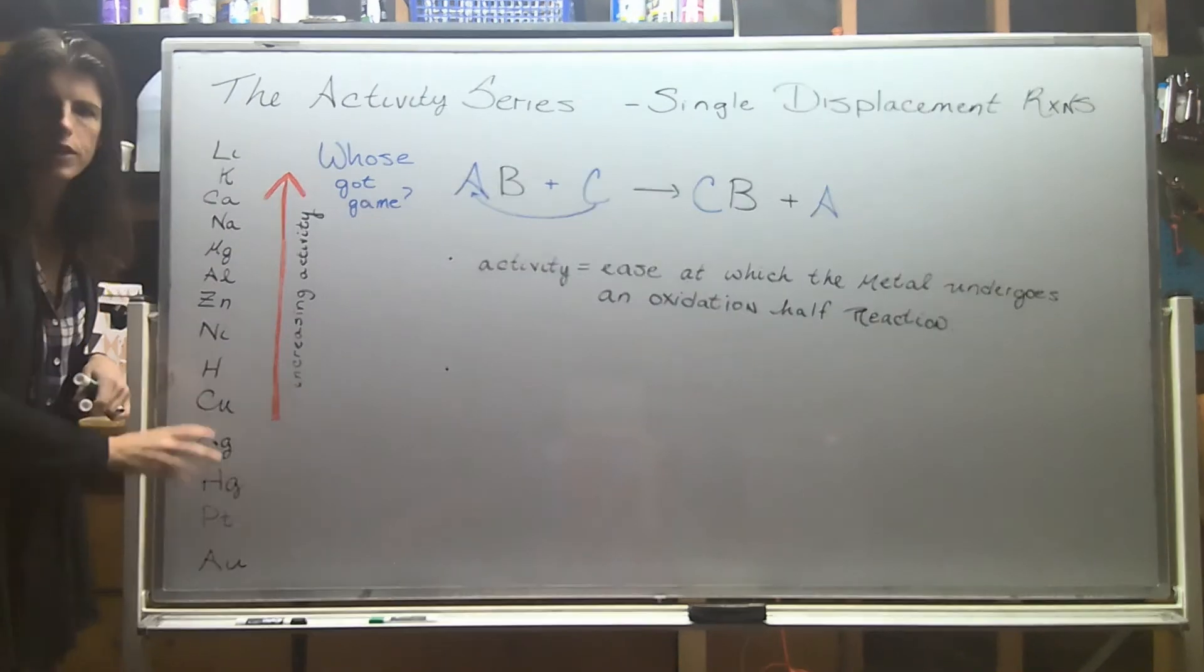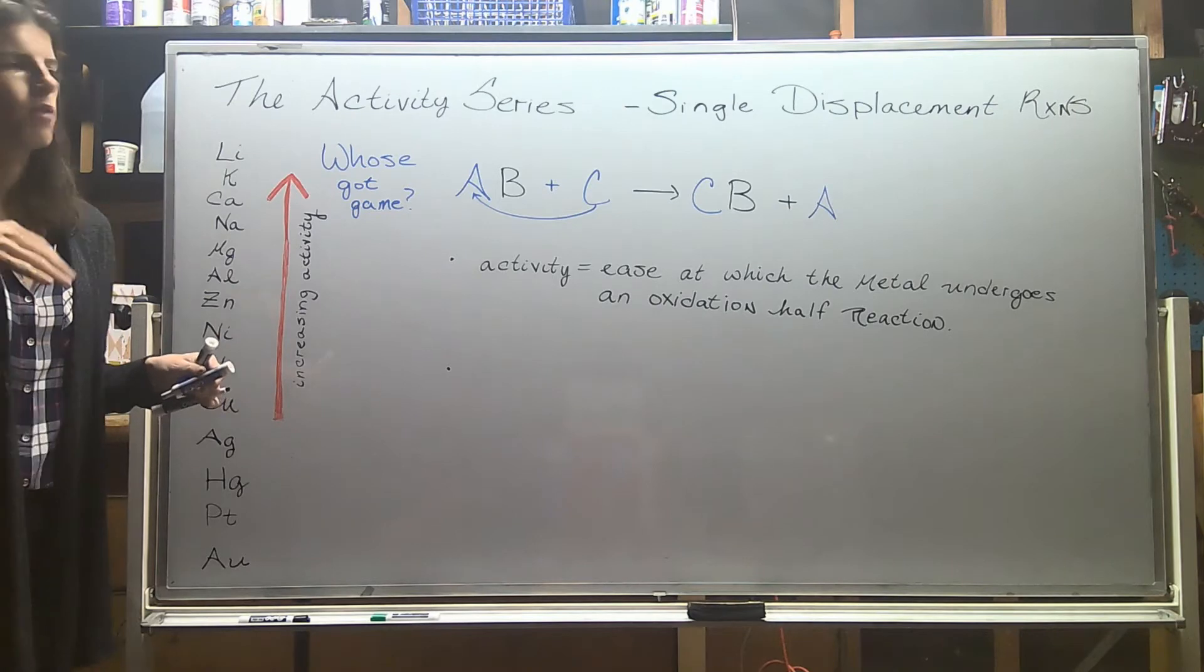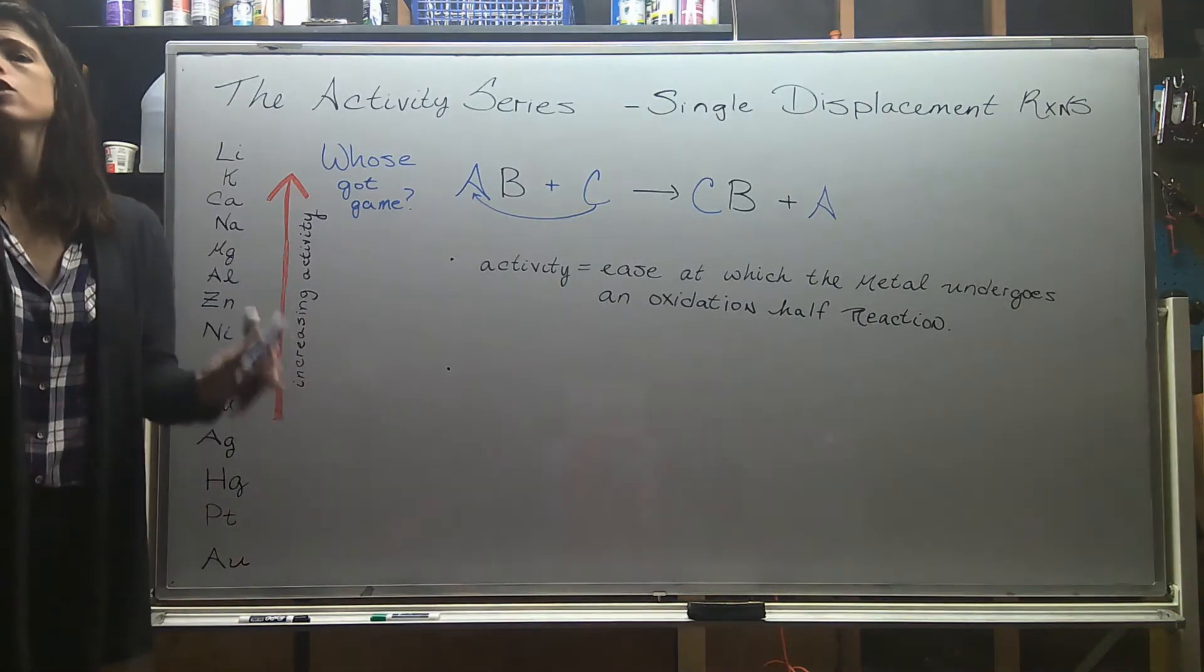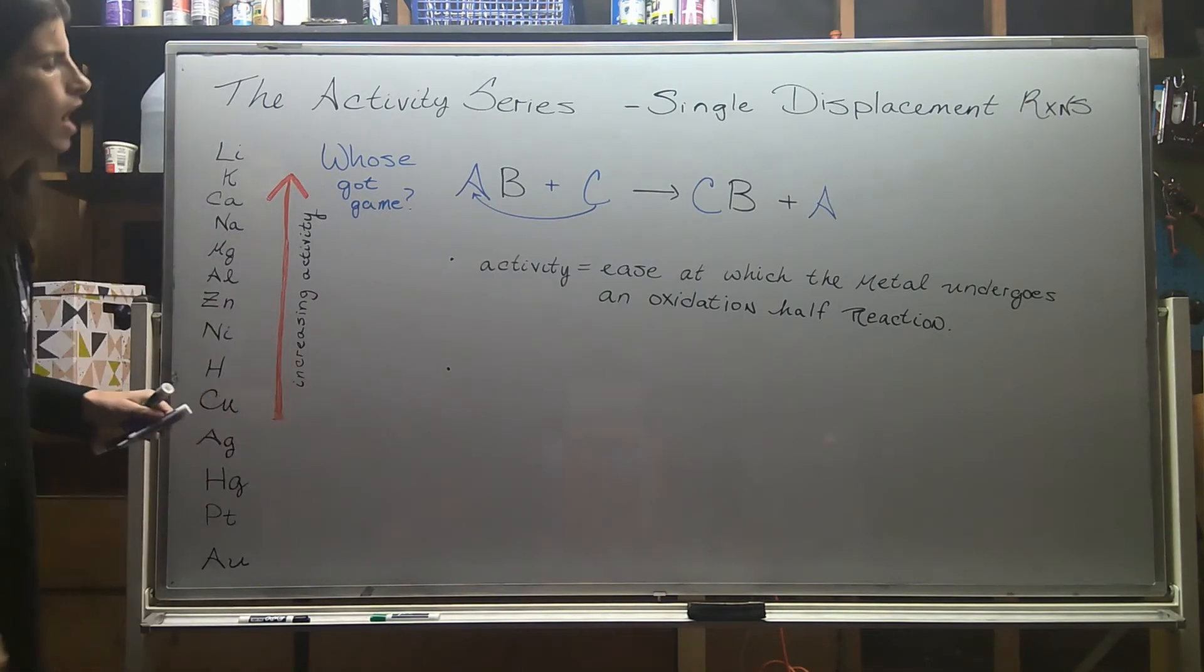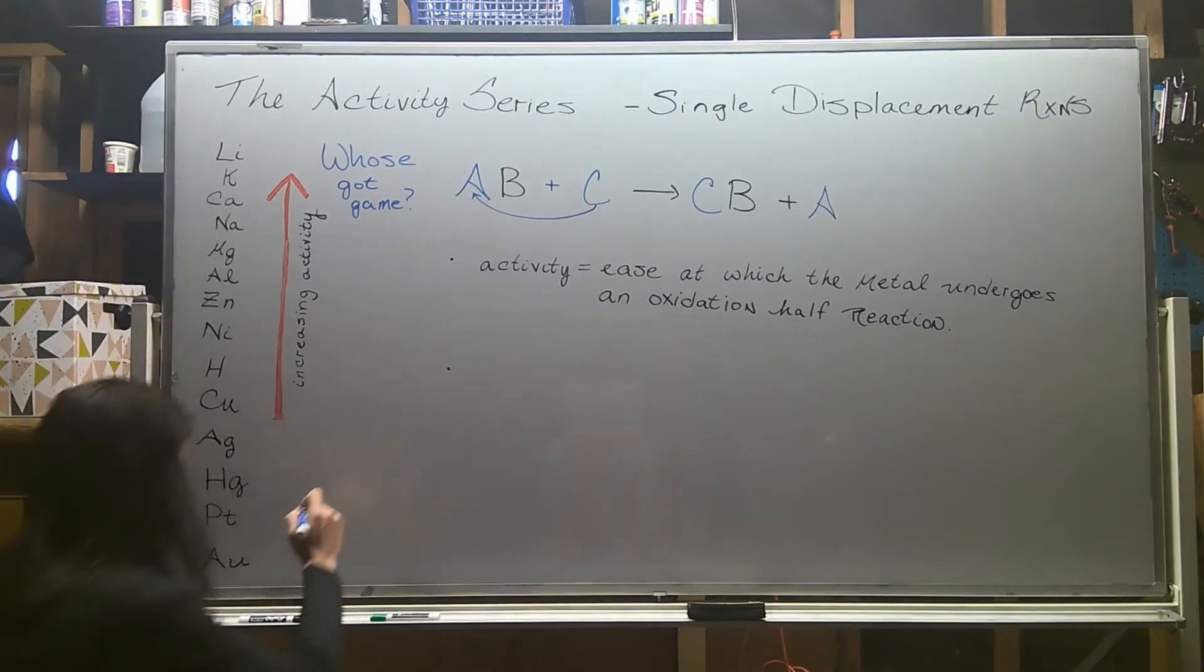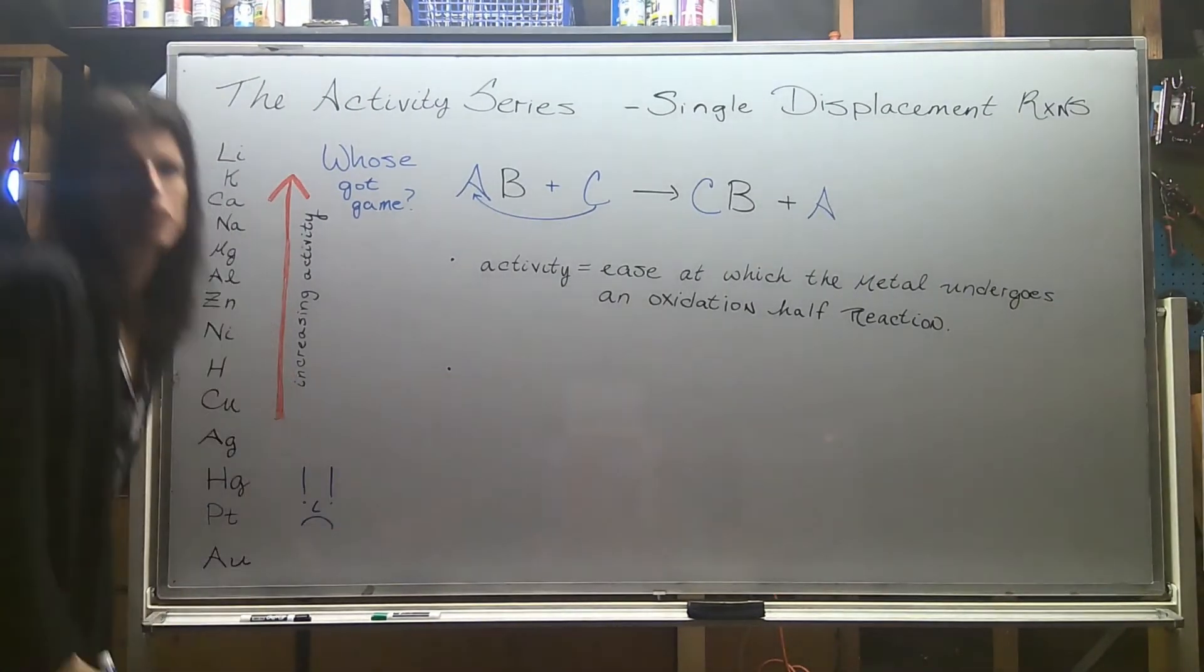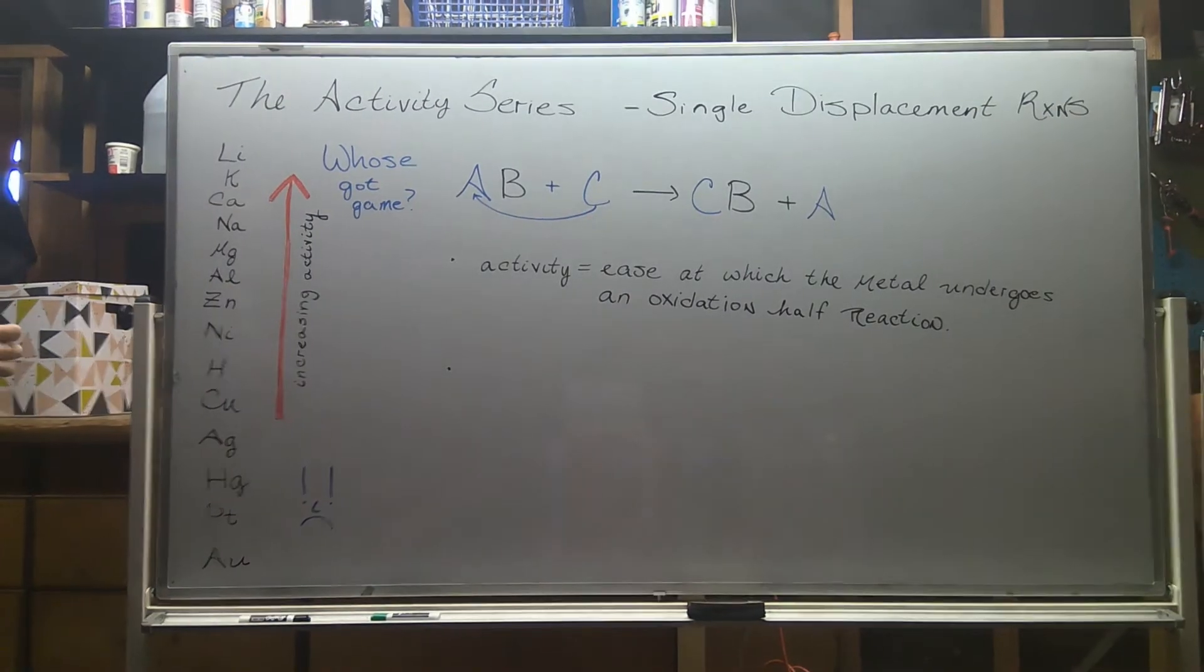But when we get down here, platinum and gold and mercury and silver, they're never going to be able to come in. They're basically, if they start at singles, they're going to be single for life. They can't come in and kick out anybody. So down here, we have our poor guys down here that, you know, it doesn't look too good for them in terms of relationships.